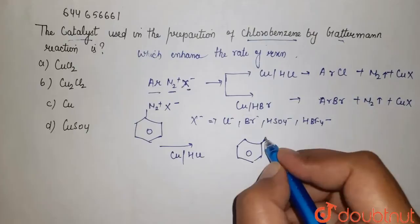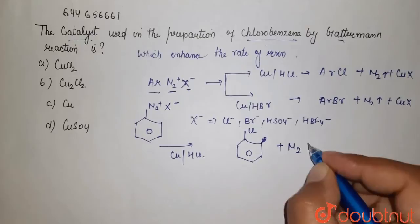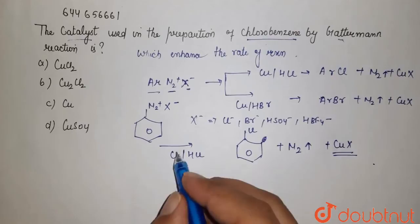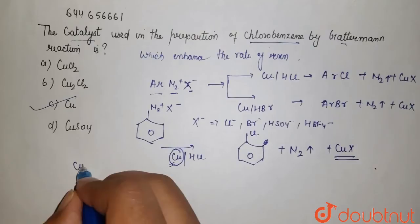So again N2 gas has liberated and your CuX got placed over here. So this is your copper which is used in your Gattermann reaction. So copper is the answer and Cu2Cl2 is used in your Sandmeyer reaction.